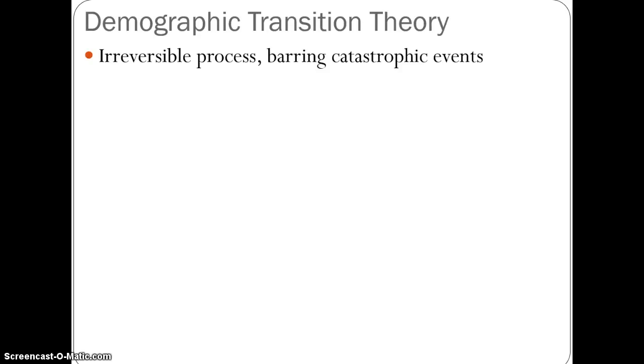Today we're going to be talking about the demographic transition model, or the demographic transition theory. Remember that this is a theory, so there are some flaws. Since the publication of your textbook in 2008, you'll find that a Stage 5 has been added. For a while it was hypothetical because the belief was that the DTM was irreversible — once you moved forward from Stage 1 to 2 to 3 to 4, you could not move backward.